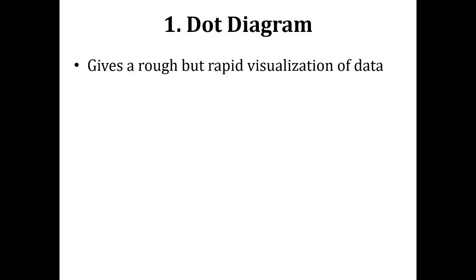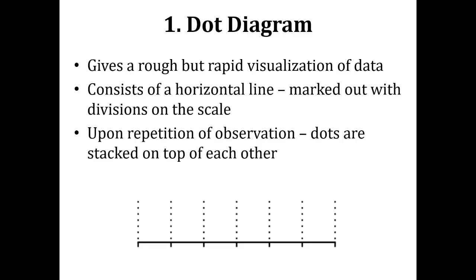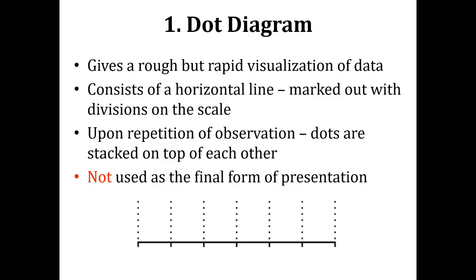We are starting from the dot diagram. A dot diagram gives a rough but rapid visualization of data. It consists of a horizontal line marked out with divisions on a scale, and you place a dot in place of each observation. Upon repetition of observations, dots are stacked on top of each other. This type of graph is only for rough visualization, especially when you are in field research without access to a computer.